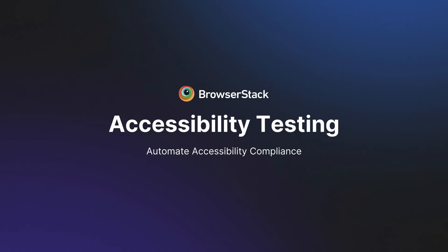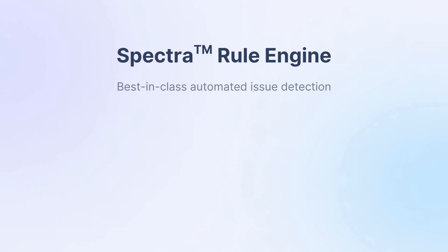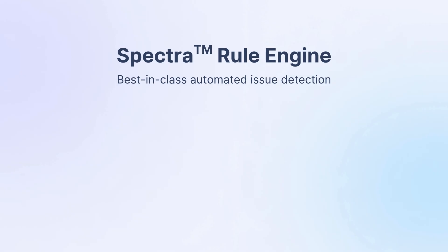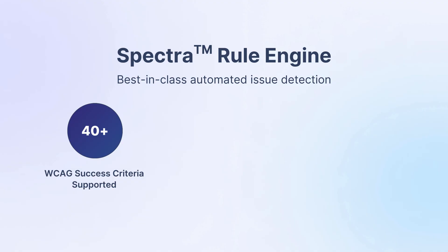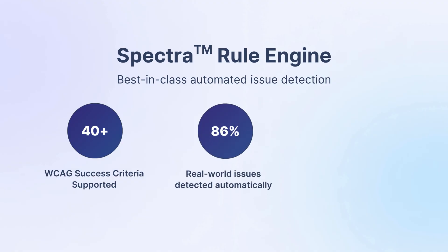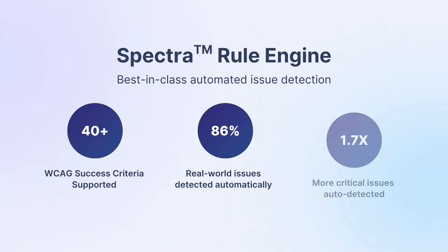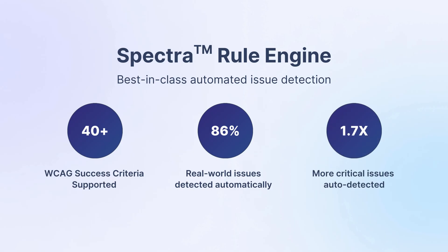At BrowserStack, we help teams automate accessibility compliance. We've built the best-in-class Spectra rule engine that automates issue detection for 40-plus WCAG success criteria to significantly reduce the time spent by teams on grunt work while detecting critical accessibility issues.